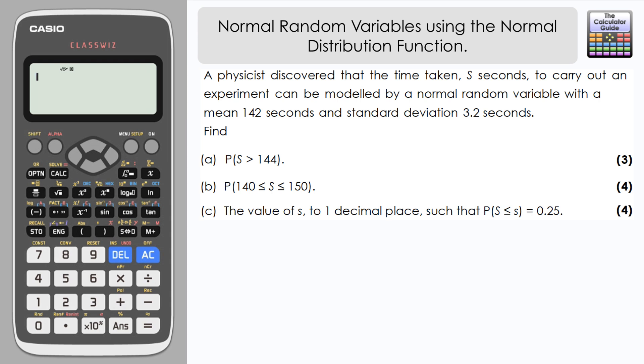A physicist discovered that the time taken, s seconds, to carry out an experiment can be modeled by a normal random variable with a mean of 142 seconds and a standard deviation of 3.2 seconds. In the first part of the question we need to find the probability that s, our time in seconds, is greater than 144.